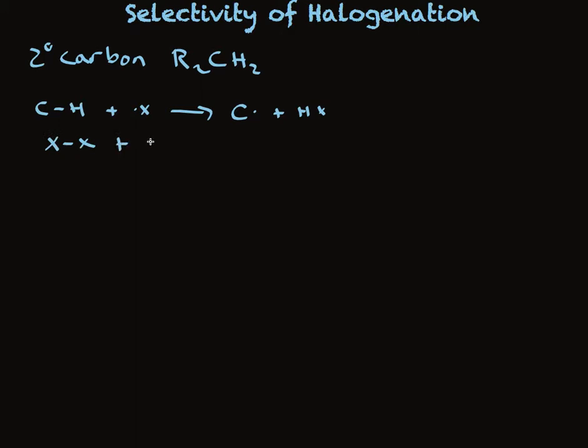In the second propagation step, we've got halogen plus a carbon radical, and that makes a new bond while it's breaking the halogen-halogen bond. So now we've got halogen radical plus Cx.